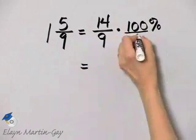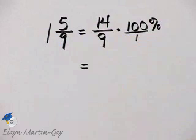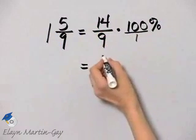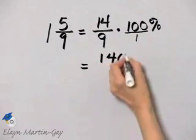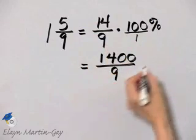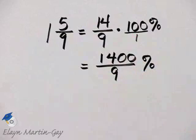I'll write that as over 1. And let's go ahead and multiply these fractions. That's 14 times 100, which is 1400, divided by 9 times 1, or 9, and that is our percent.